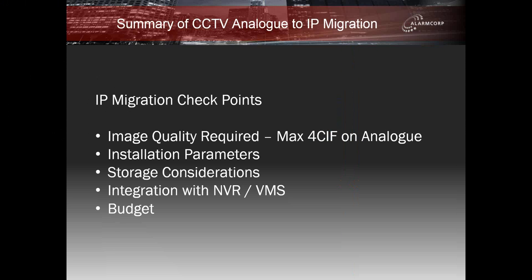To summarise a few key checkpoints: Image quality — keep in mind that the maximum from analog is 4SIF, so even when integrating via an encoder into an IP solution, you are not increasing the camera resolution. You get the benefit of more convenient management through modern VMS systems, but still at 4SIF. Installation parameters — the smart approach looks at the site and uses one-to-one encoders or one-to-many four-channel encoders over the coax, which are very important points that can help make a successful installation in terms of dollars, time, and deployment.